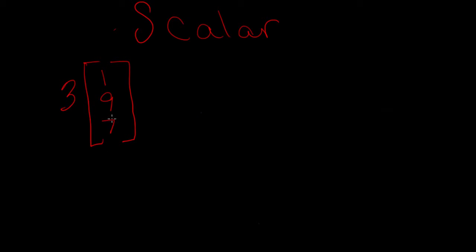So you're going to multiply the matrix by the given scalar. This number here is the scalar. So we're going to go three times one, three times nine, and three times seven.